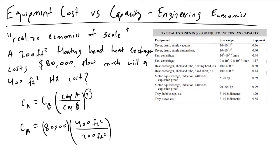And we look to our table. So we've got a floating head heat exchanger, and the floating head heat exchanger is right here with a value of 0.6 for the exponent. So we will plug in 0.6 for our n value right here.